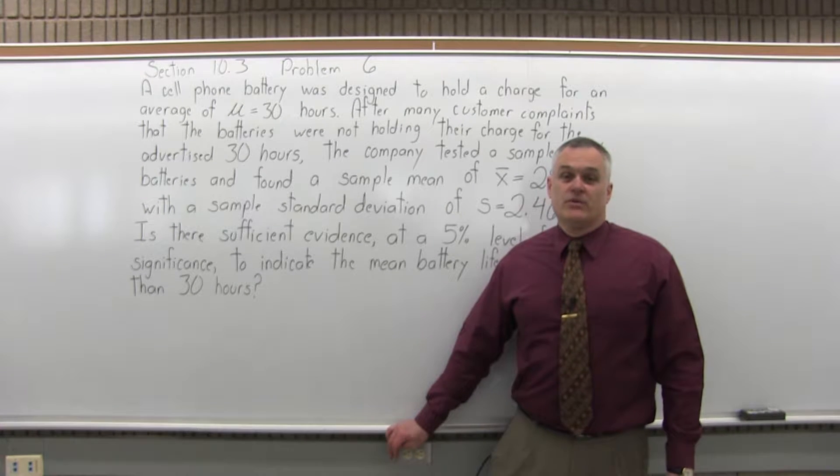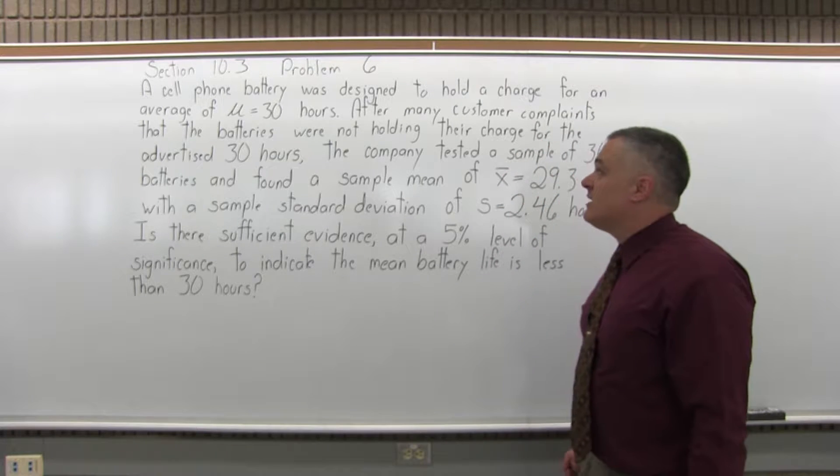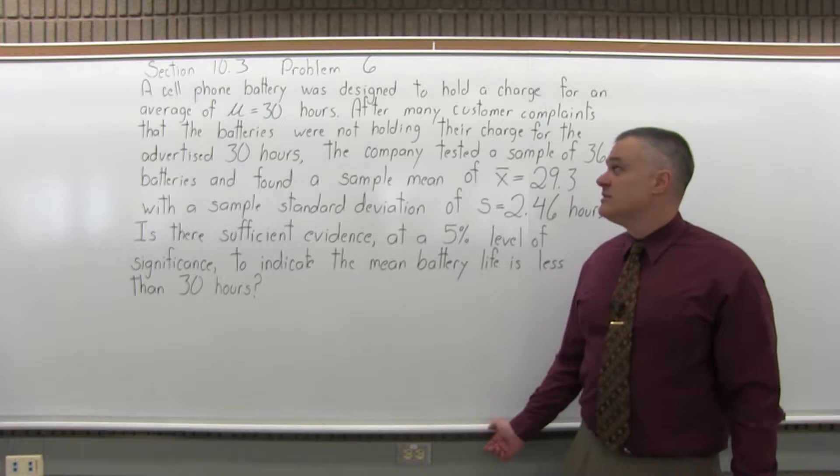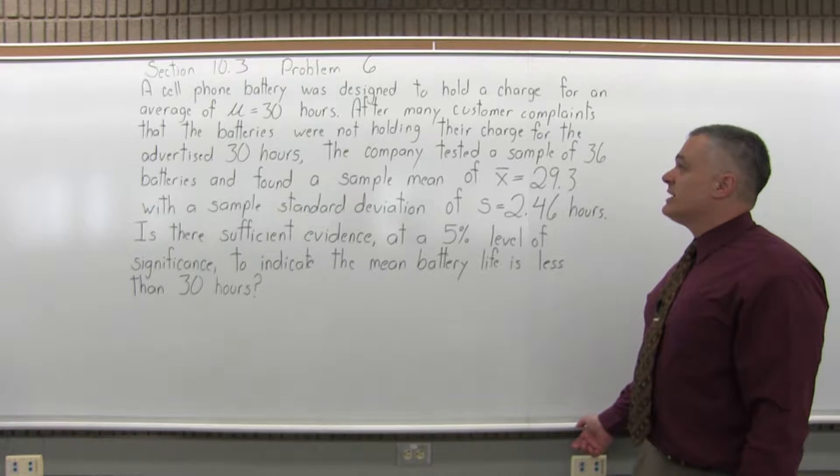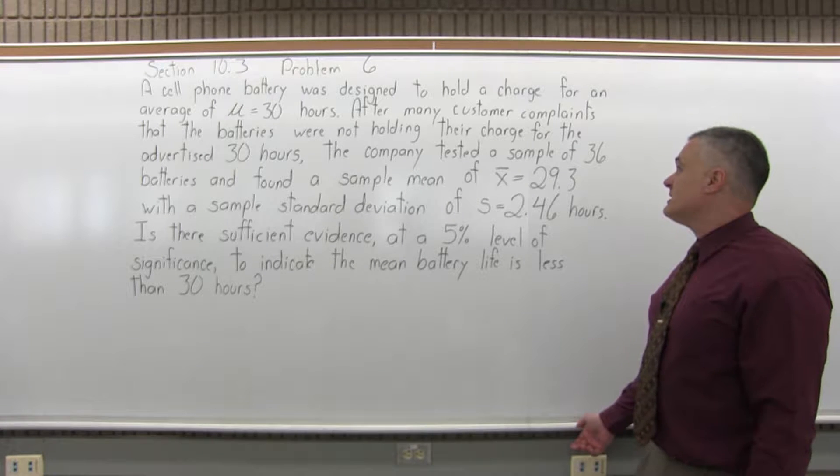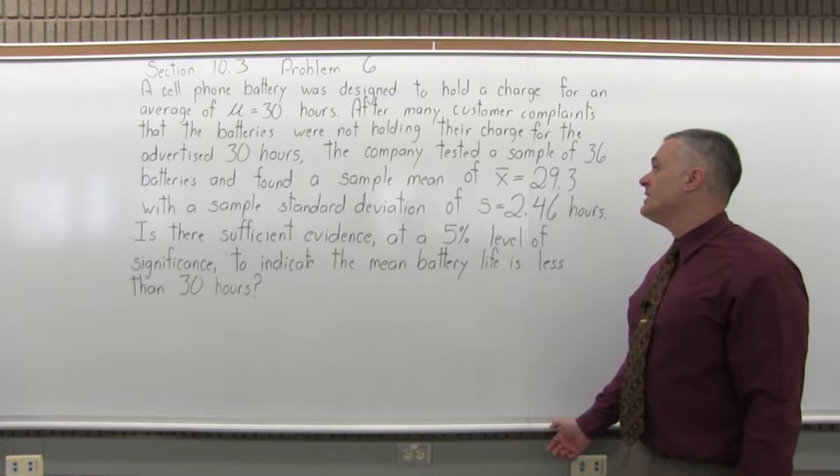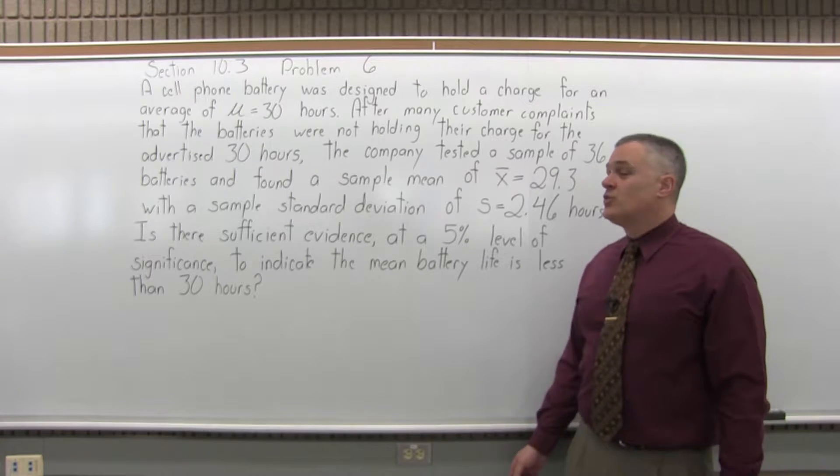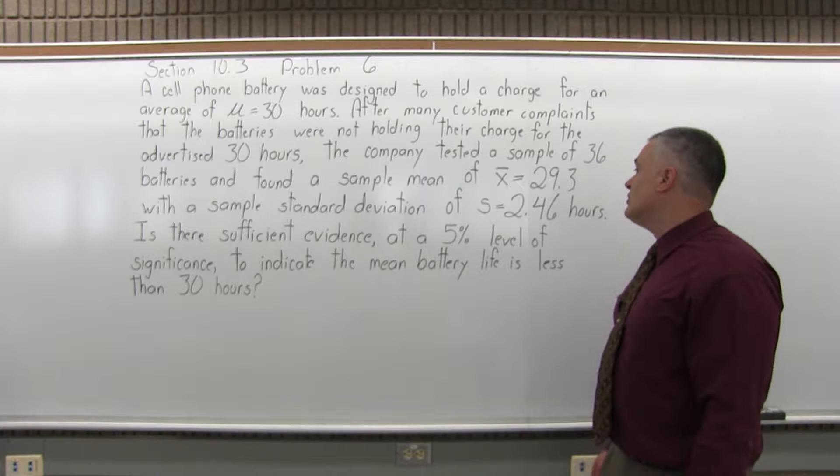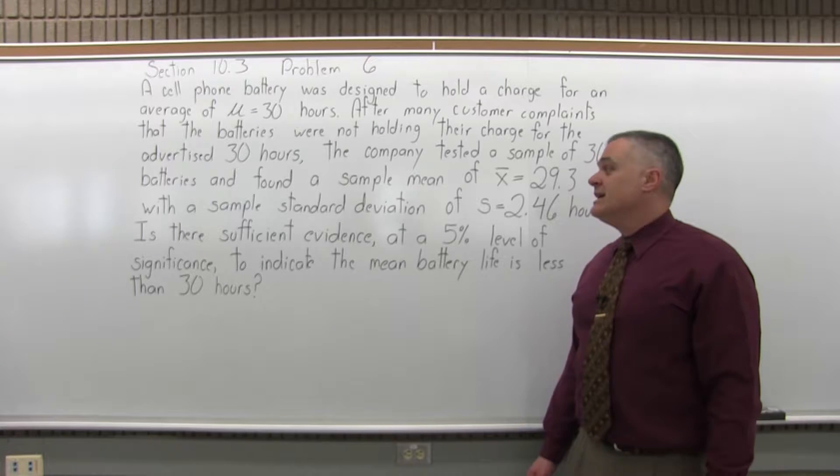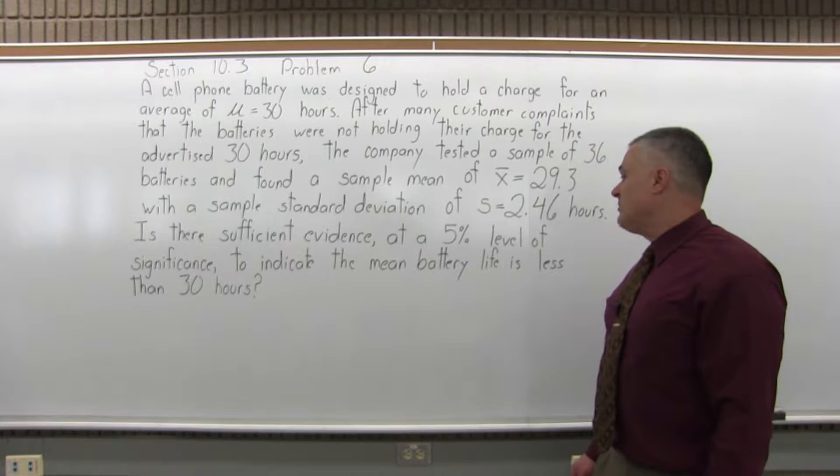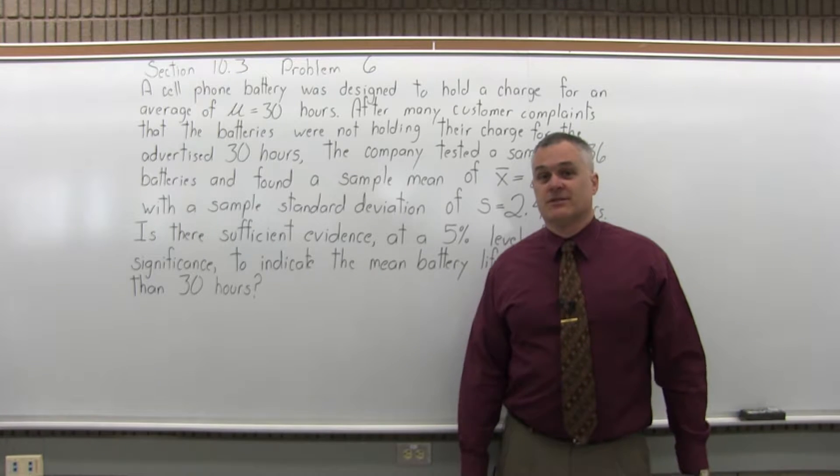This is Section 10.3, Problem 6. A cell phone battery was designed to hold a charge for an average of mu equal to 30 hours. After many customer complaints that the batteries were not holding their charge for the advertised 30 hours, the company tested a sample of 36 batteries and found the sample mean of x bar equal to 29.3, with a standard deviation of s equal to 2.46 hours. Is there sufficient evidence at a 5% level of significance to indicate the mean battery life is less than 30 hours?